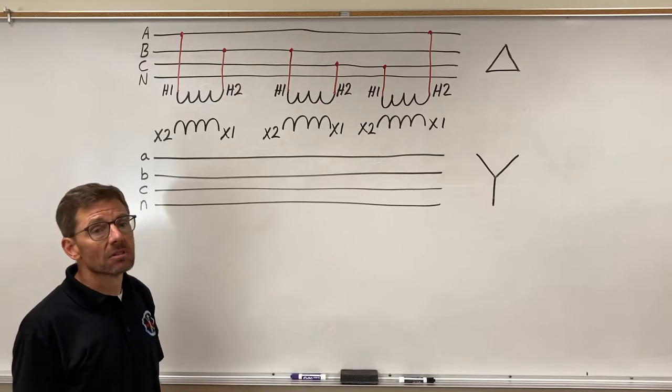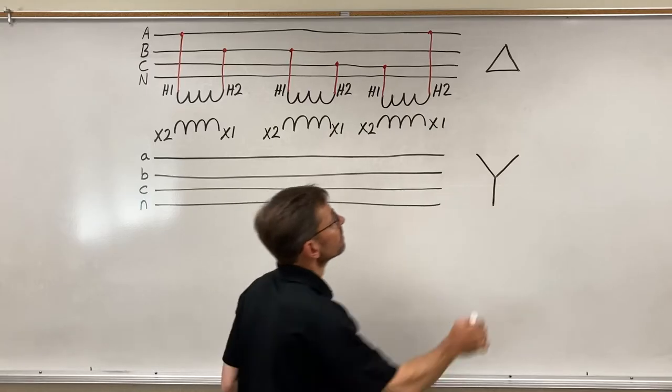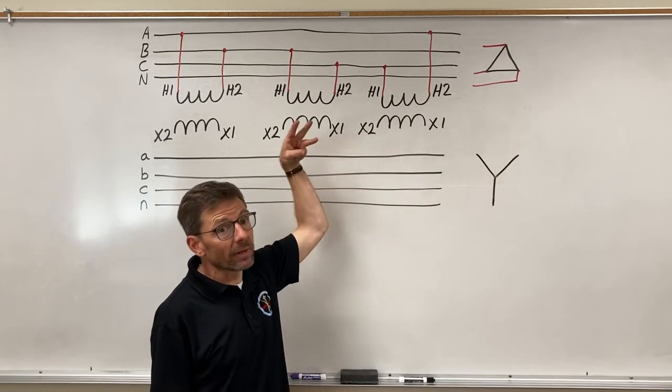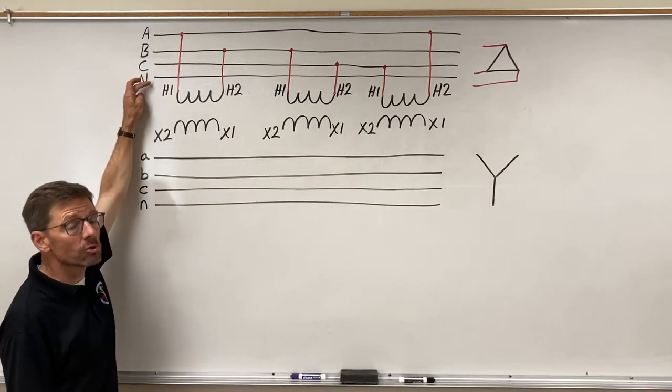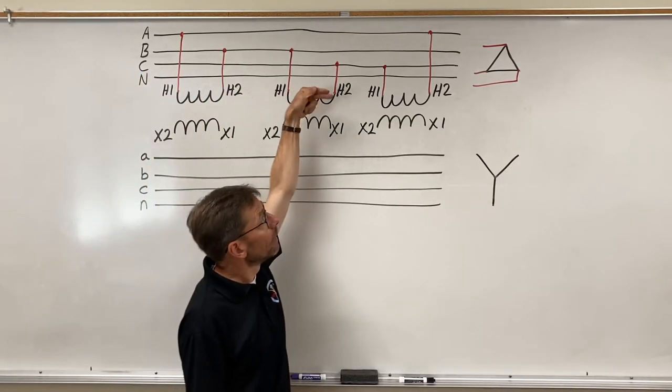Now why did I do this? Let's look at my little delta symbol over here. If my three line wires are coming into a delta, notice I did not use the neutral here. So generally speaking on a delta, I'm going to have three wires connected across the three windings.